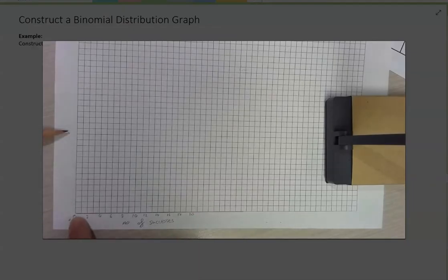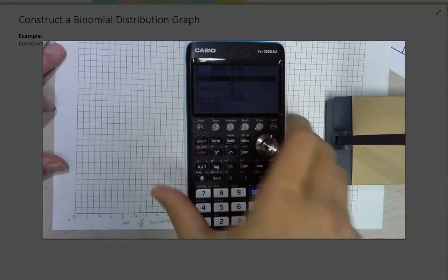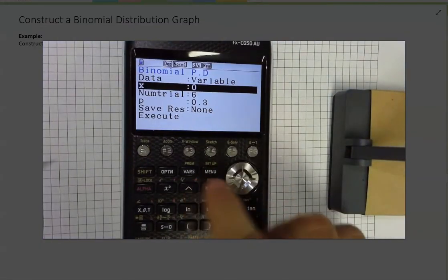Now the probability of each of those things happening is going to be on the y-axis. I'm not going to fill that in yet because I don't really know what my scale should be. My calculator comes out. Let's sort of zoom in on that a little bit.